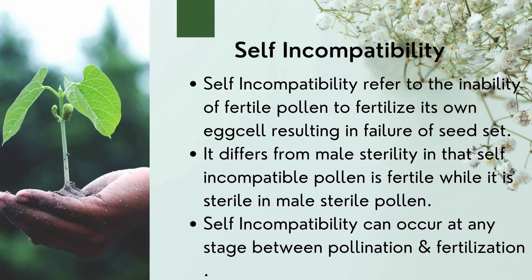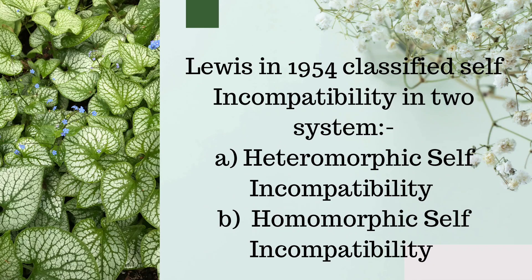Self-incompatibility refers to the inability of fertile pollen to fertilize its own egg cell, resulting in failure of seed set. It differs from male sterility in that self-incompatible pollen is fertile, while it is sterile in male sterile plants. Self-incompatibility can occur at any stage between pollination and fertilization.